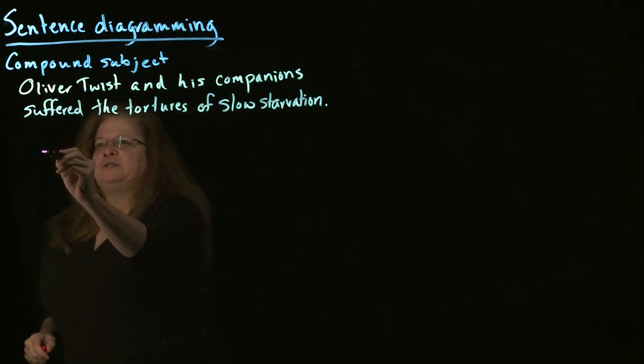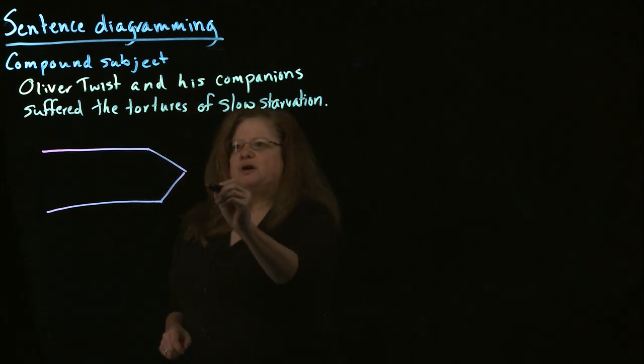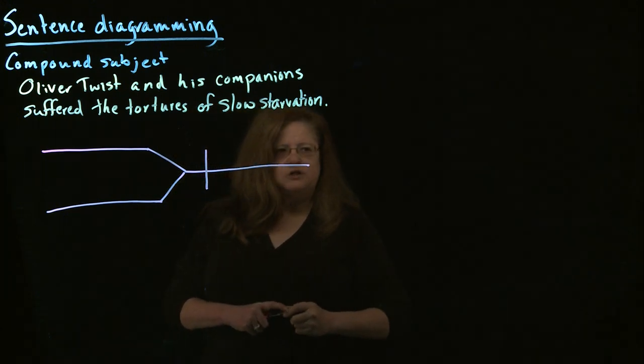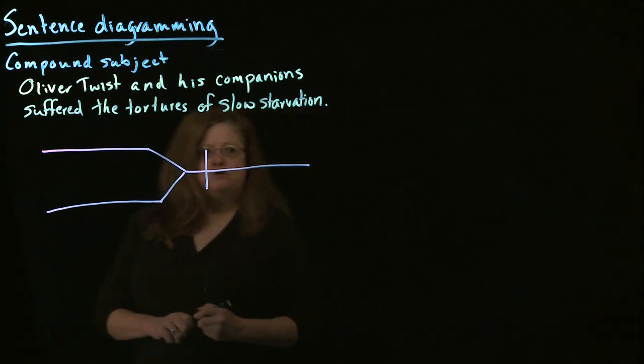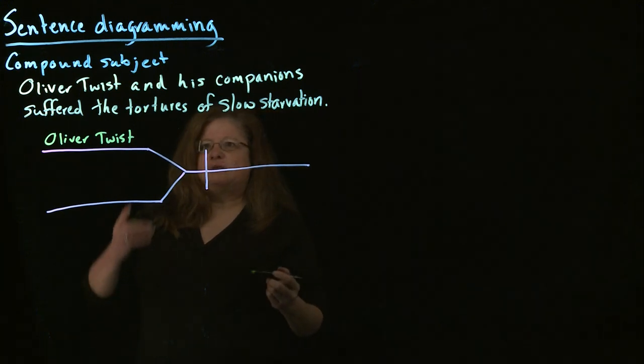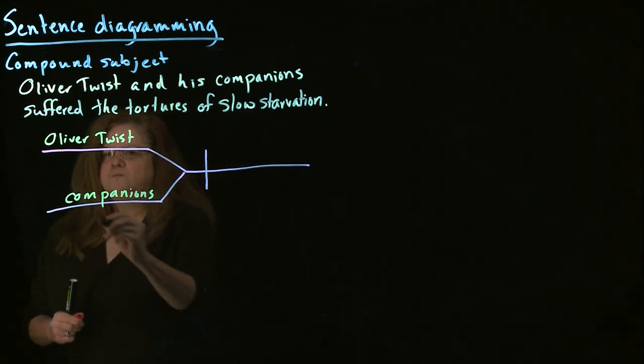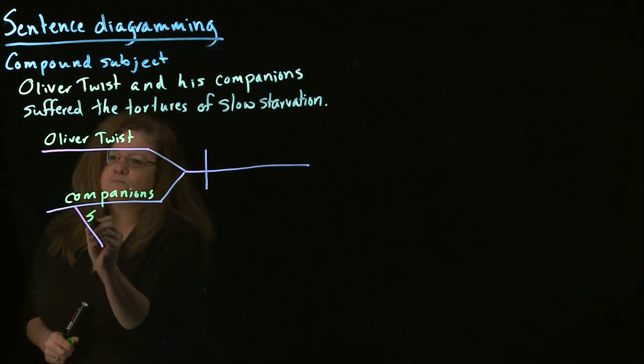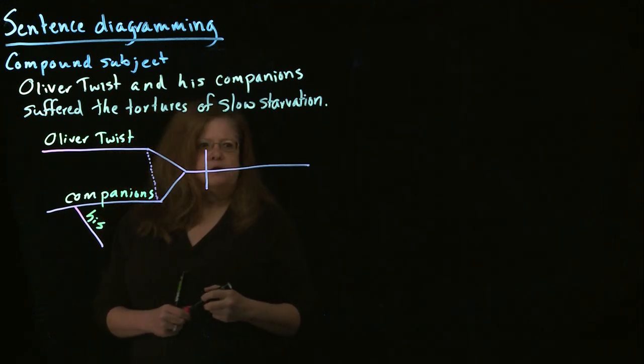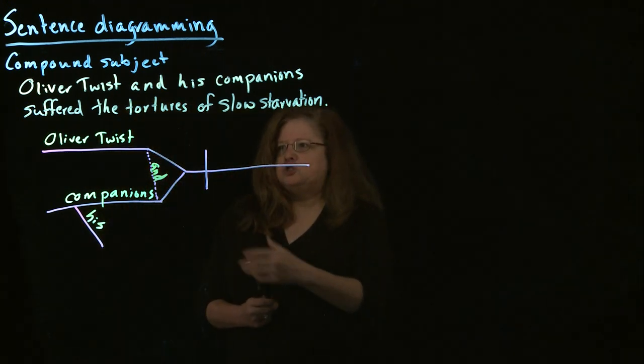So we will have two lines for subjects, which will then come together. And then we have our vertical line to show where the subject ends, the verb begins. And so we fill this framework with the two subjects. The first subject is Oliver Twist. And the second subject is his companions. And what we do, we have the word AND that's connecting these two. So we just put a dotted line from one to the other. And then we put our conjunction on that dotted line. And so we have our compound subject.